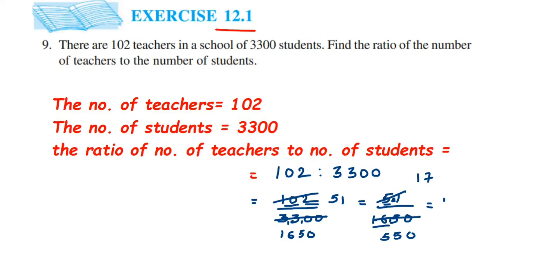So here we got 17 upon 550. Now in 17 table 550 doesn't go. So we cannot cancel this further. So ratio will become 17 is to 550.